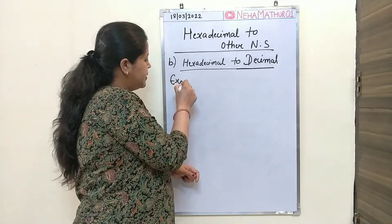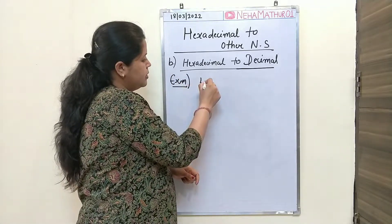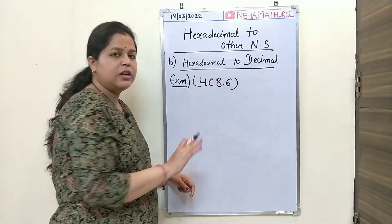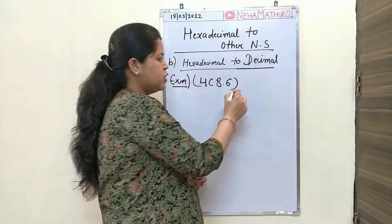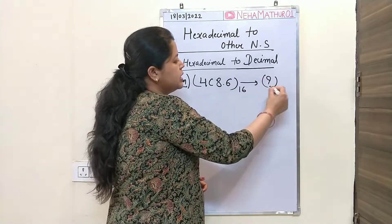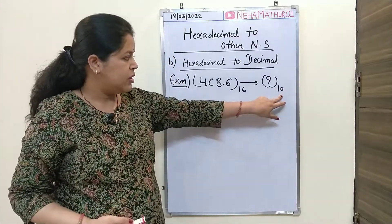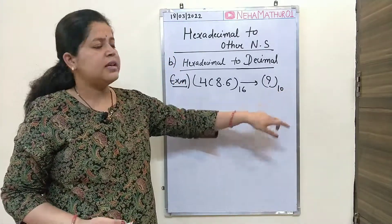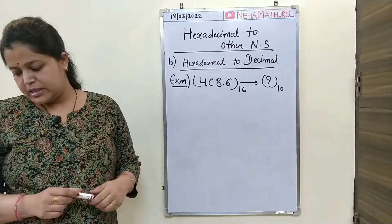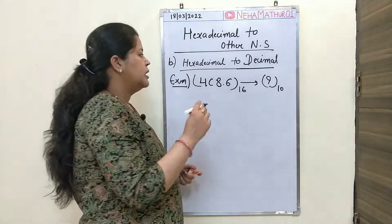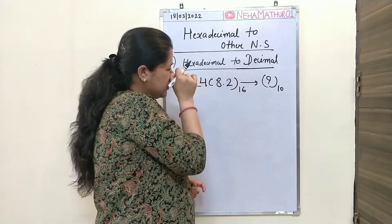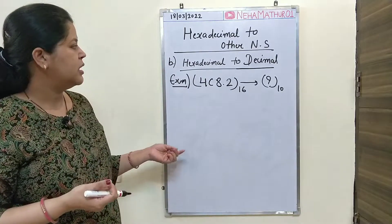Again I am taking one example. The given number has base 16, which means it is a hexadecimal number, and I want to convert it into decimal because I am taking 10 as the base, and 10 is the base for the decimal number system.